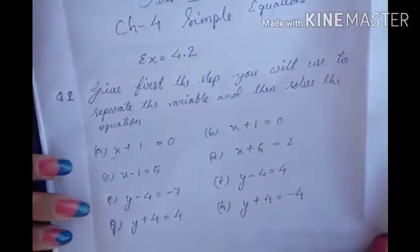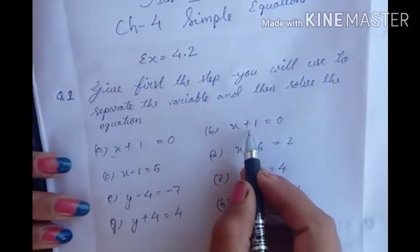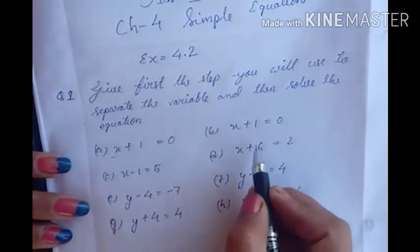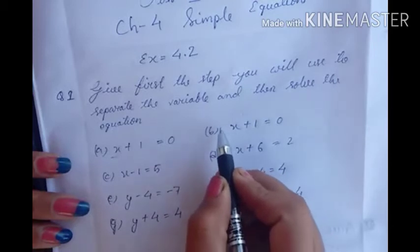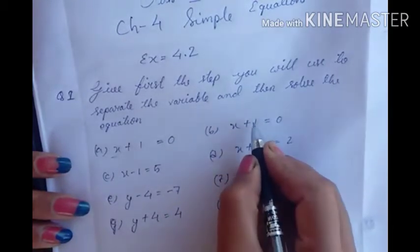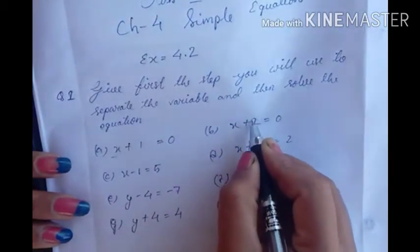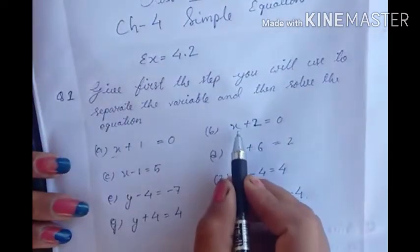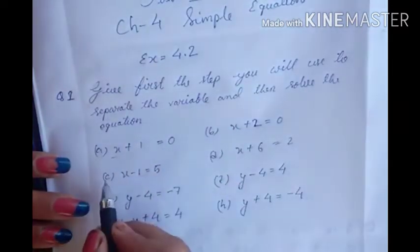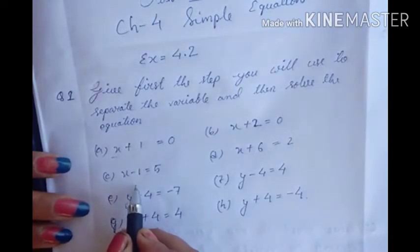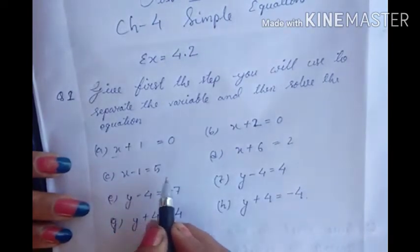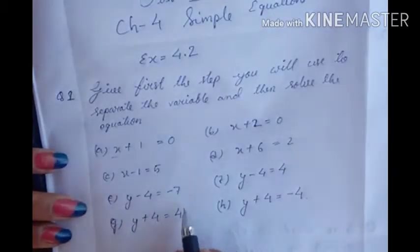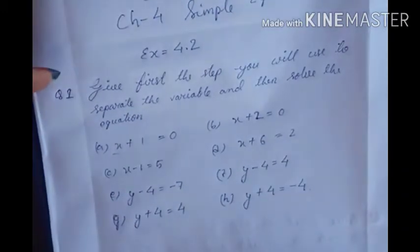There might be a small mistake in the question reading. The questions are: A is x plus 1, B is x plus 2 equal to 0, C is x minus 1 equal to 5, and x plus 6 equal to 2. Now the solution for question number 1.